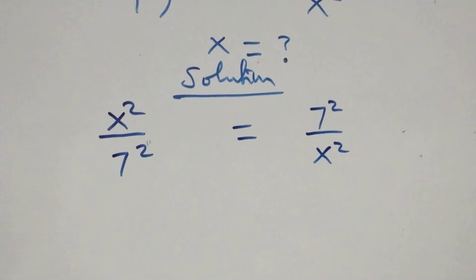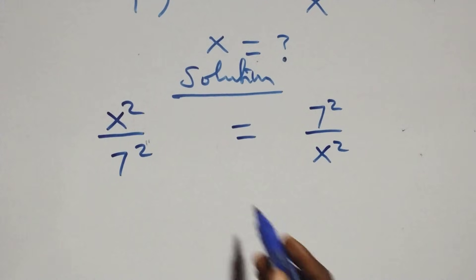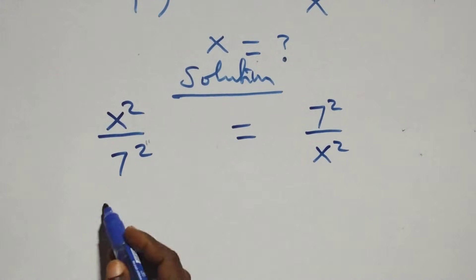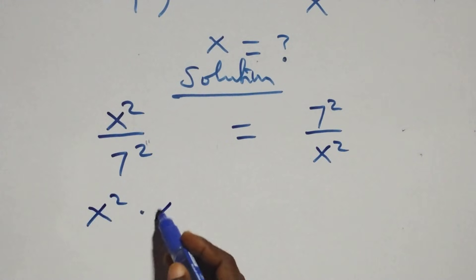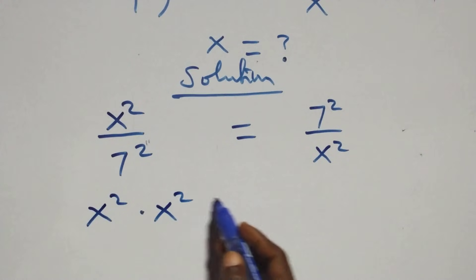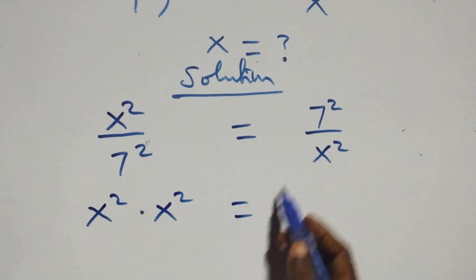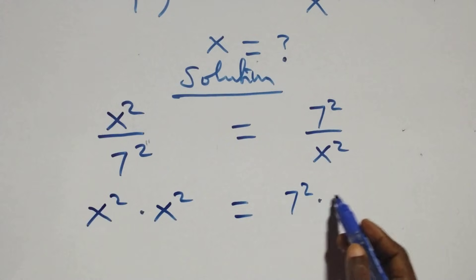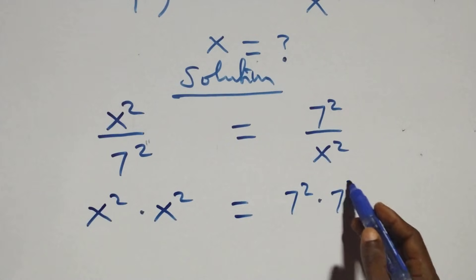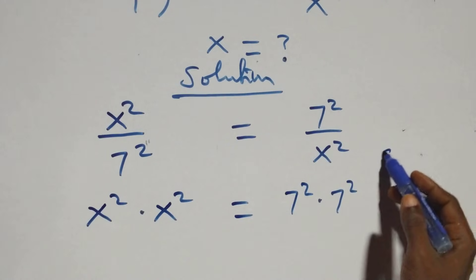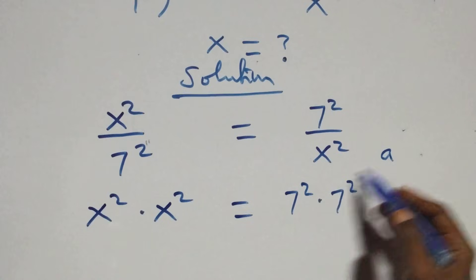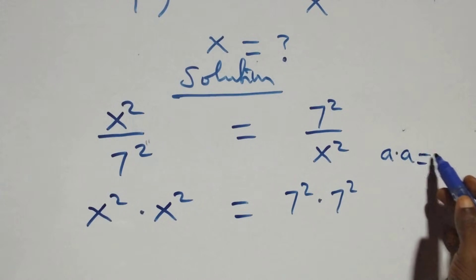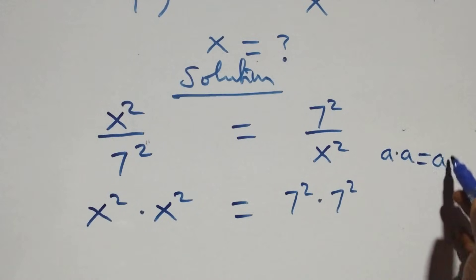The next step is to cross multiply: x squared times x squared equals 7 squared times 7 squared. This follows the rule that a times a is the same as a squared.